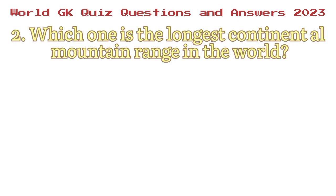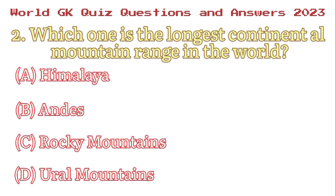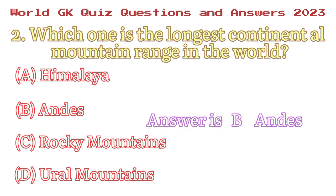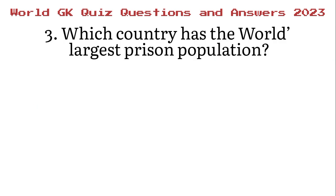Number 2. Which one is the longest continental mountain range in the world? A. Himalaya, B. Andes, C. Rocky Mountain, D. Ural Mountains. Answer is B. Andes.